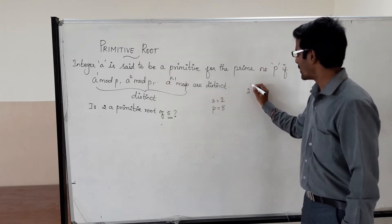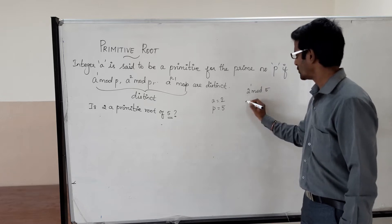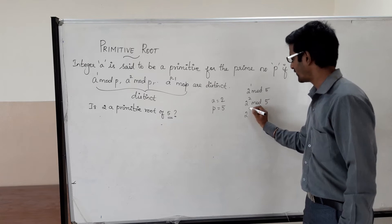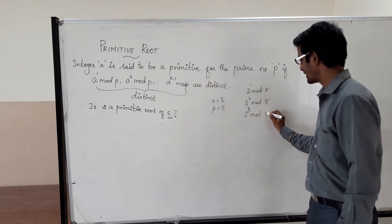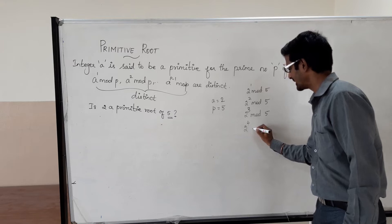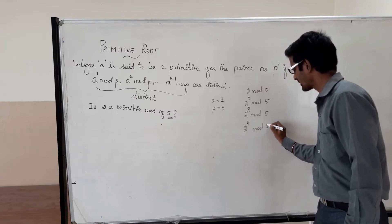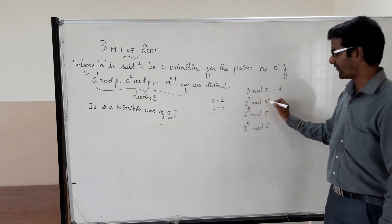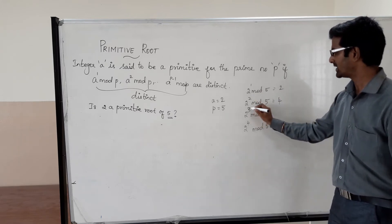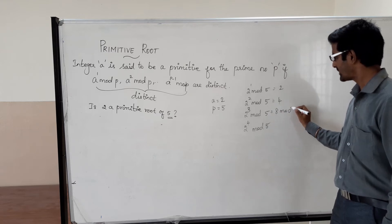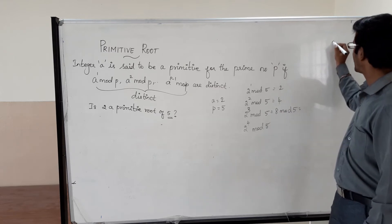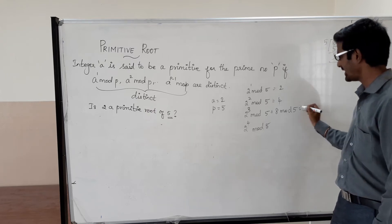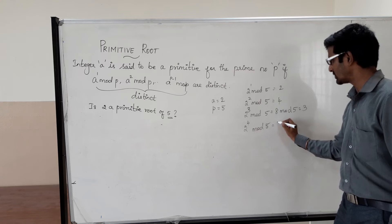So, 2 power 1 mod p, 2 power 2 mod p, 2 power 3 mod p, and 2 power 4 mod p. 2 power 1 mod 5 is equal to 2. 2 power 2 mod 5 is equal to 4. 2 power 3 is 8; 8 mod 5 — when 8 is divided by 5, 1 times 5, the remainder is 3. So we get 3.